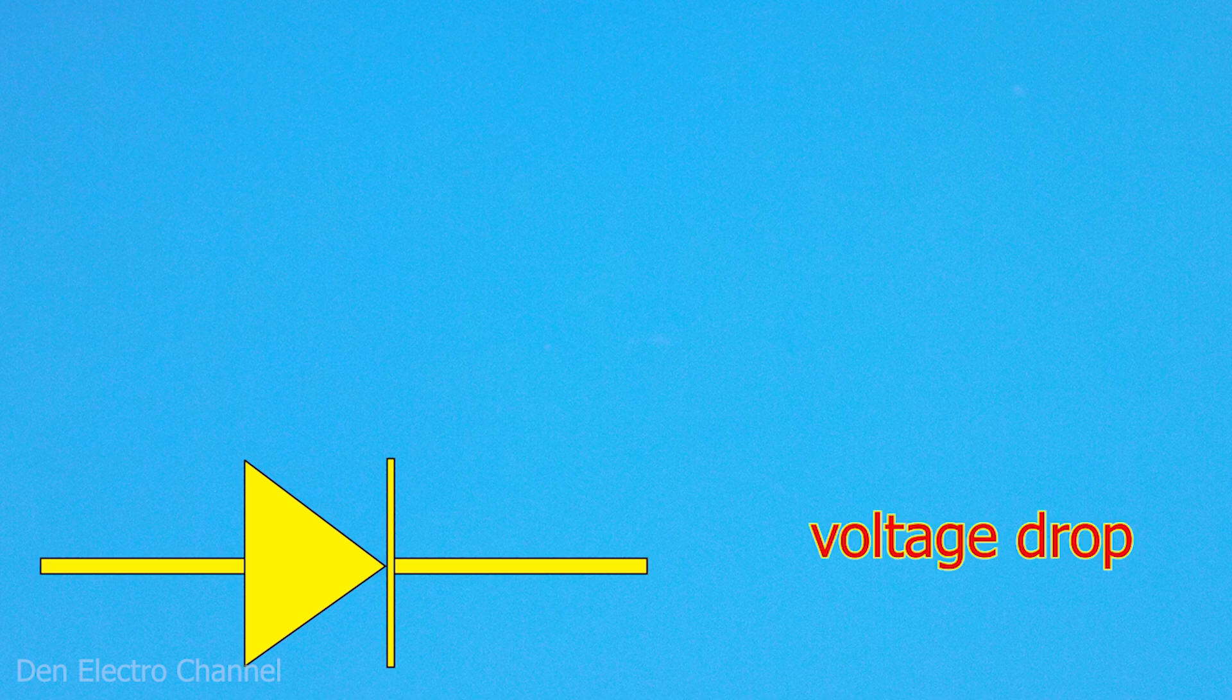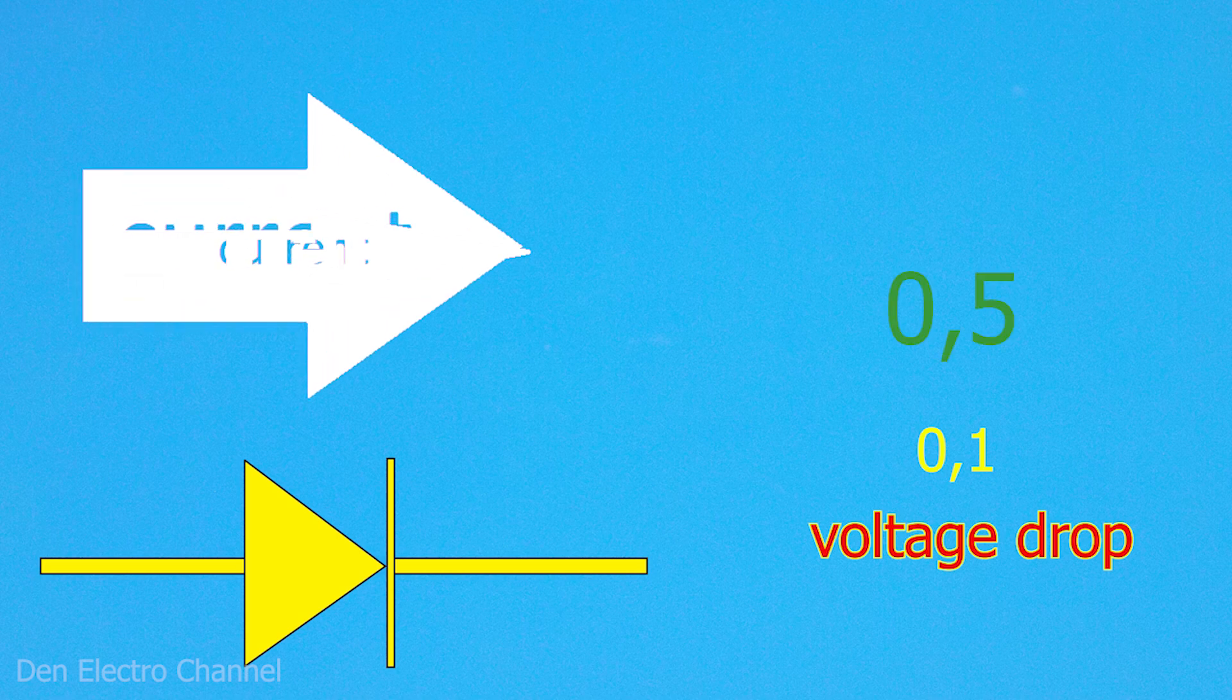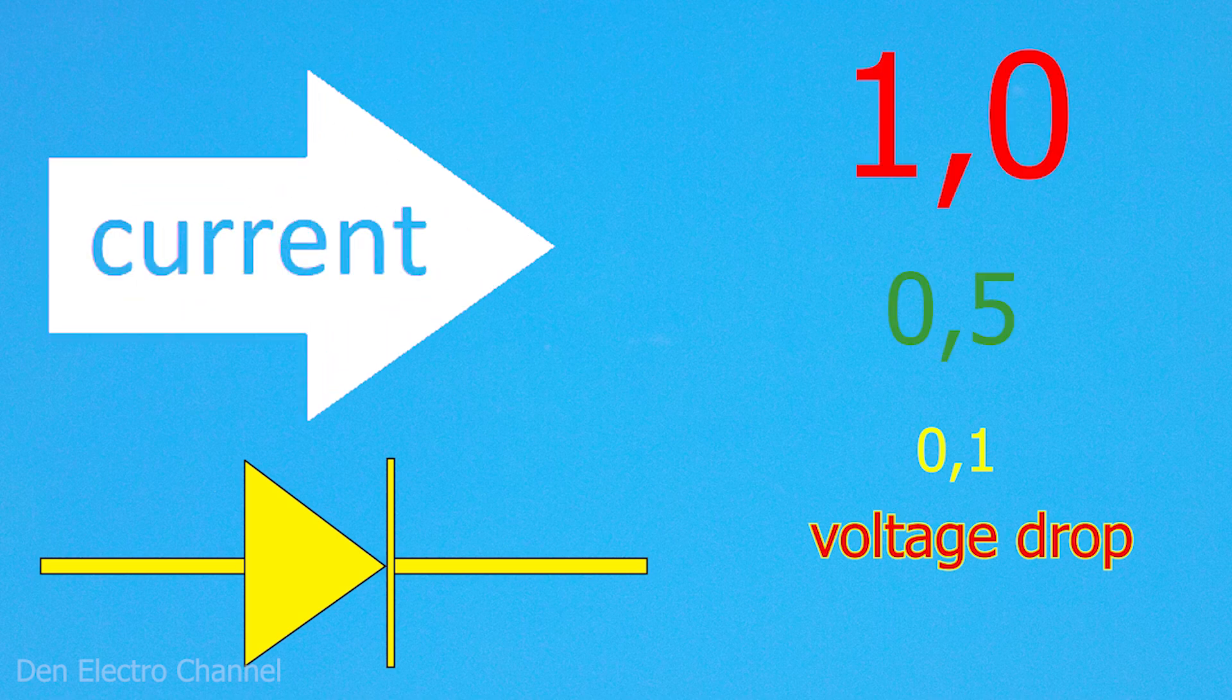The voltage drop on a diode depends on the current passing through it. The greater the current, the greater the voltage drop. Let's figure out whether this is good or bad.